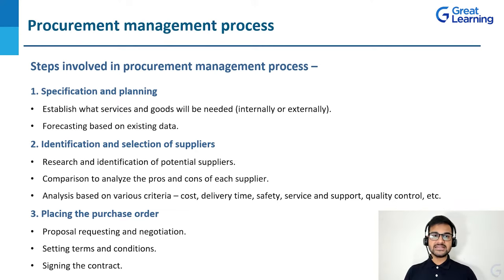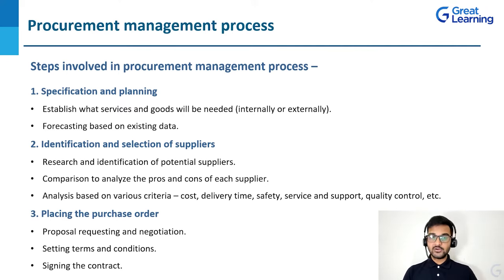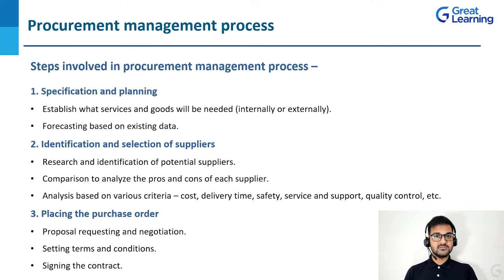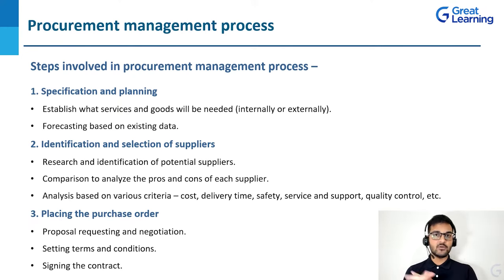Once specification and planning is done, we move to the second step: identification and selection of suppliers. You do your research, identify potential suppliers for the required product or service, and compare them to analyze the pros and cons of each supplier. You select the best candidate based on various criteria such as cost, delivery time, safety, service, support, quality control, etc. That completely depends upon the kind of product or service you need and the type of business that you have.